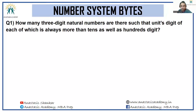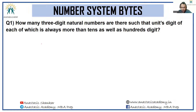Let's look at the solution of number system. How many three-digit natural numbers are there such that the unit digit of each is always more than the tens as well as the hundreds digit?